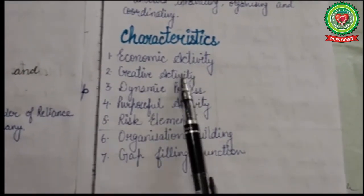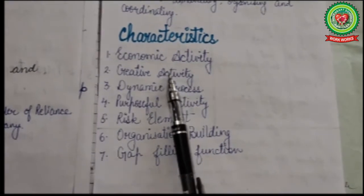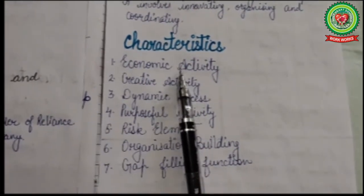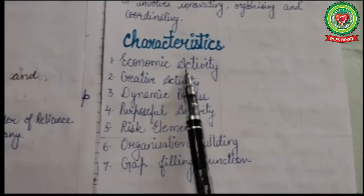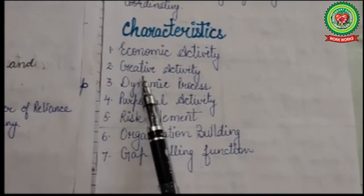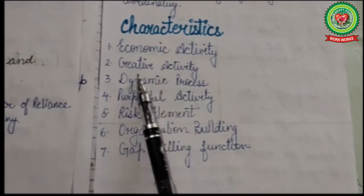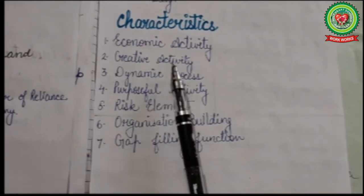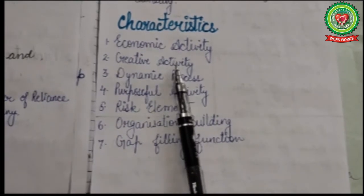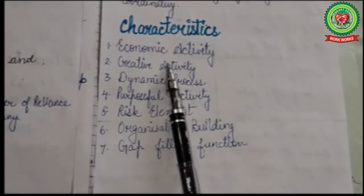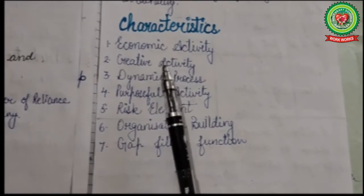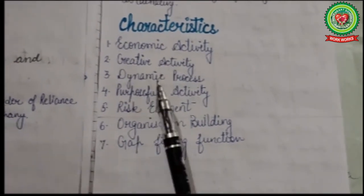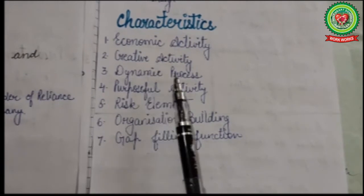The characteristics of entrepreneurship: First is economic activity — it involves the creation and operation of an enterprise, and involves the creation of wealth and money. Second is creative activity — it involves innovation or introducing something new, maybe a new product, new idea, or new method, and that is why it is called creative activity.